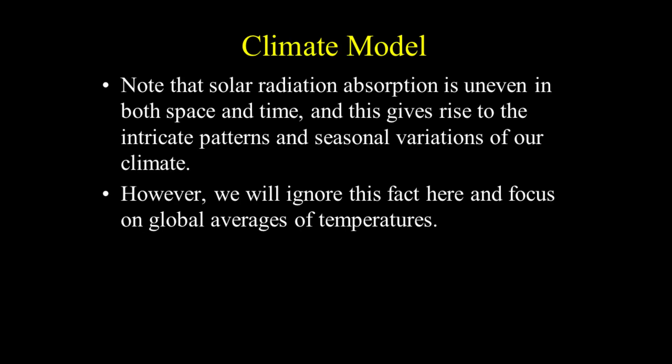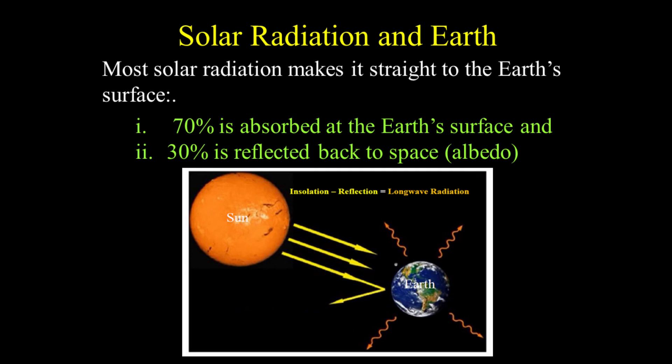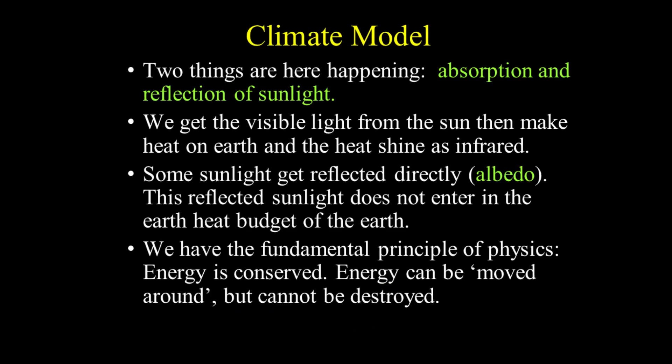Solar radiation absorption is uneven in both space and time, giving rise to intricate patterns and seasonal variations of our climate. However, we will ignore this fact here and focus on global averages of temperatures. Most solar radiation makes it straight to the Earth's surface. 70% is absorbed at the Earth's surface and 30% is reflected back to space — which is albedo. We get visible light from the Sun, then make heat on Earth, and the heat shines as infrared. Some sunlight gets reflected directly — this is albedo — and does not enter into the Earth's heat budget.